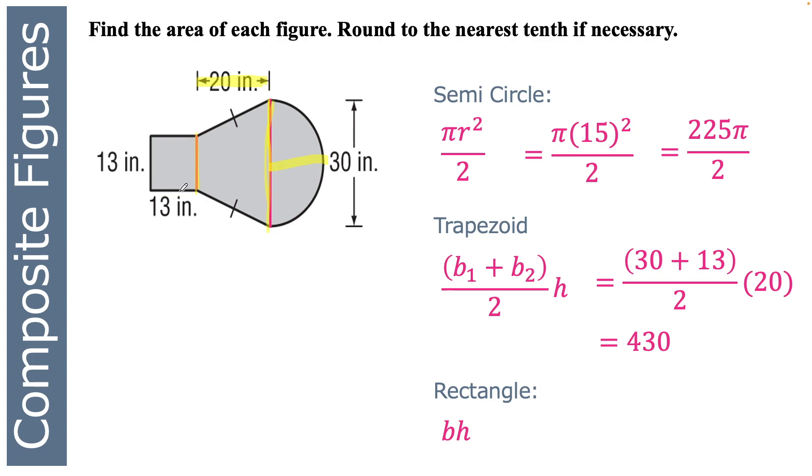And then finally, our rectangle or square is 13 times 13, which is 169. So the area of the whole thing is just adding all those pieces together. Grab your calculator. It's about 952.4 inches squared.